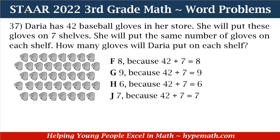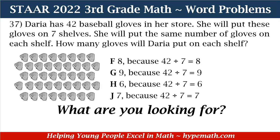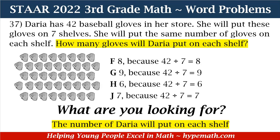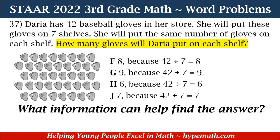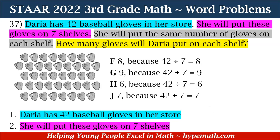In order to solve this problem, the first thing we need to do is ask ourselves: what are we looking for? We are looking for the number of gloves Daria will put on each shelf. Now that we know what we're looking for, the next question is: what information can help find the answer? Number one, Daria has 42 baseball gloves in her store. And two, she will put these gloves on seven shelves.